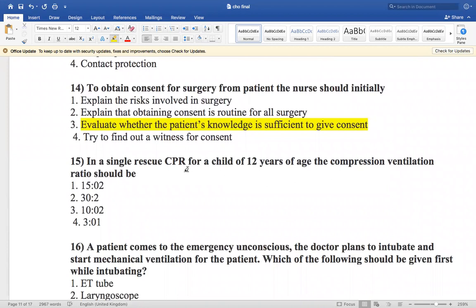Now the next question is: in a single rescue CPR for a child of 12 years of age, the compression ventilation ratio should be 15 ratio 2, 30 ratio 2, 10 ratio 2, or 3 ratio 1. So the compression ventilation ratio should be 30 ratio 2.